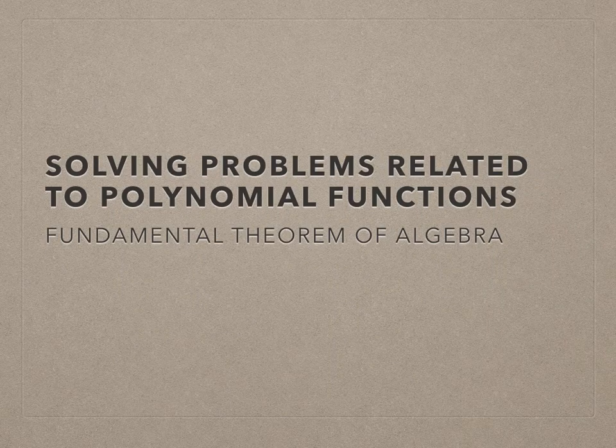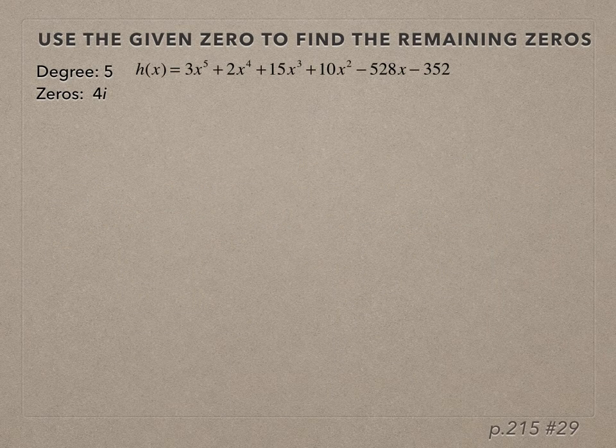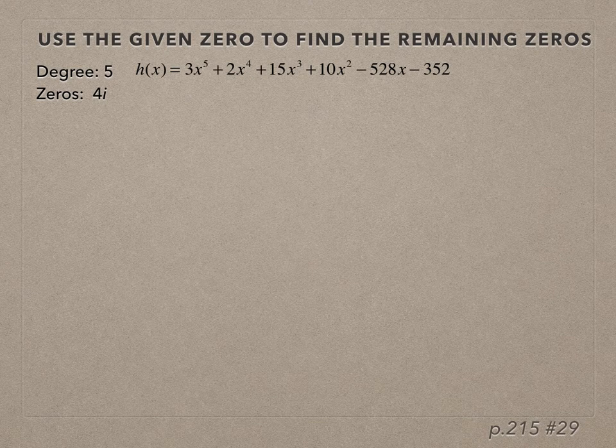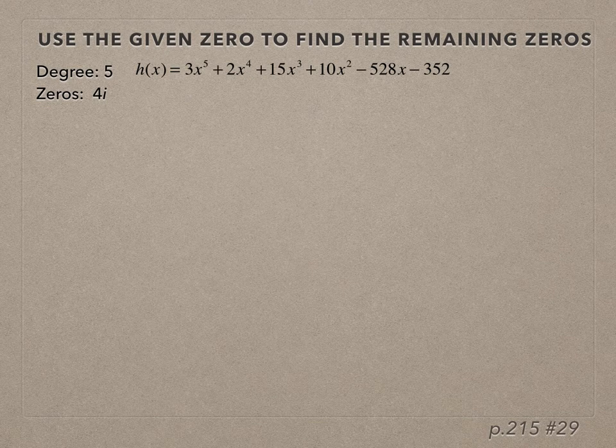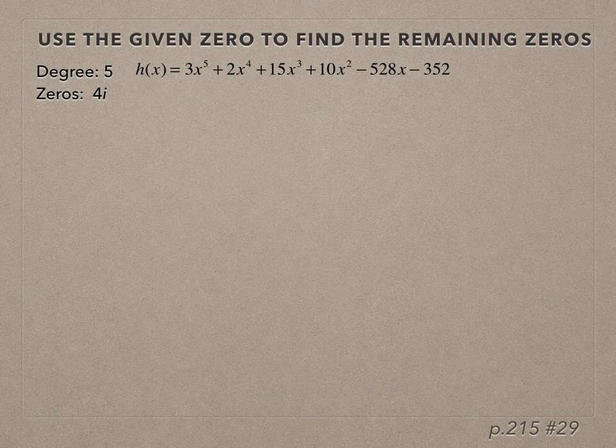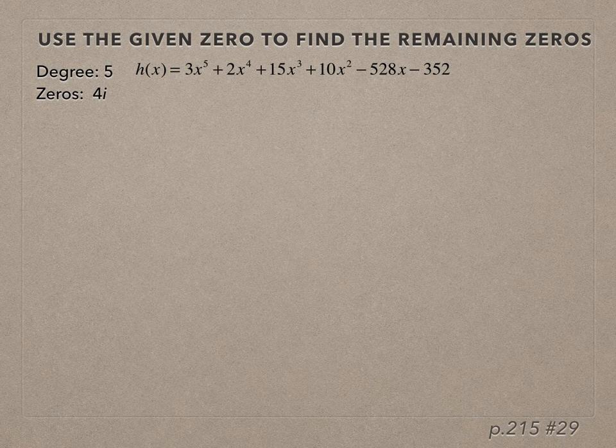We'll solve a problem related to polynomial functions. A polynomial function h(x) has been given: 3x⁵ + 2x⁴ + 15x³ + 10x² - 528x - 352. We can see this function is of degree 5. One of the zeros has been given, 4i, and we're asked to use the given zero to find the remaining zeros.